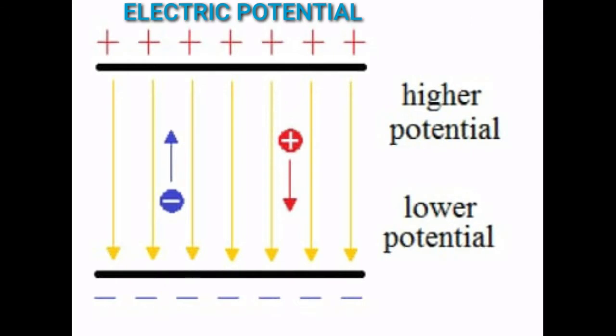Now, we move on to learn about electric potential. You are familiar with the water current and air current. You also know that there must be a difference in temperature between two points in a solid for the heat to flow in it. Similarly, a difference in electric potential is needed for the flow of electric charges in the conductor. The charges will flow from a point which is at a higher electric potential to a point which is at a lower electric potential.